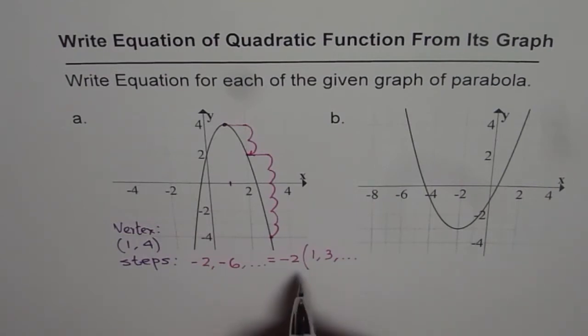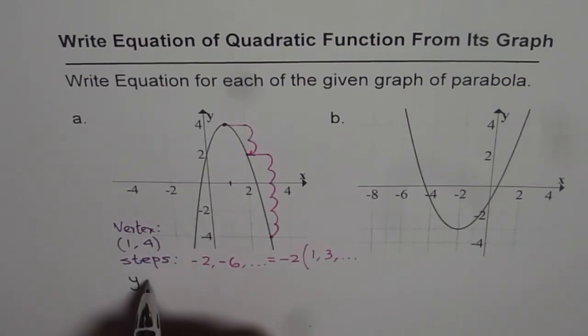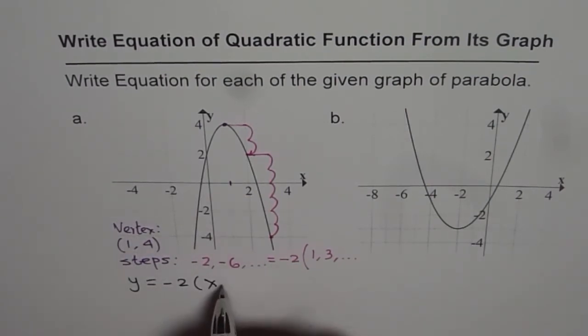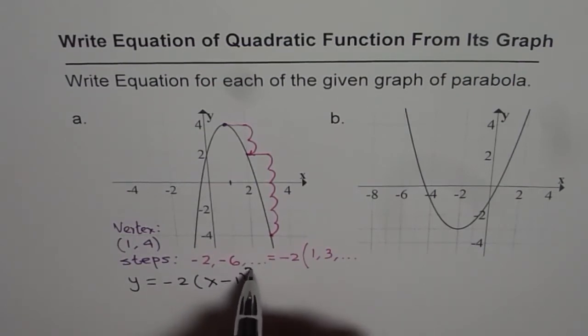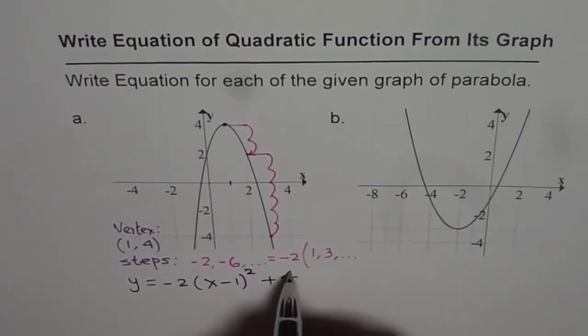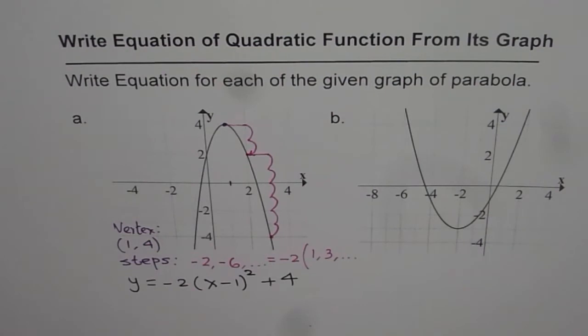And knowing this, we can write down equation of our parabola as y equals minus 2, x vertex is at x equals to 1. So we will write (x minus 1) whole square plus 4. So that gives you the equation of parabola without any calculation.